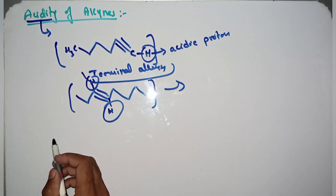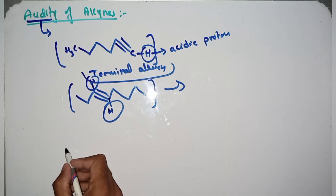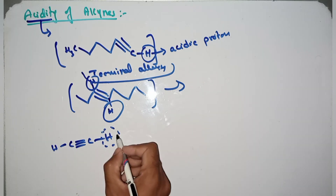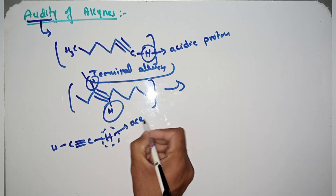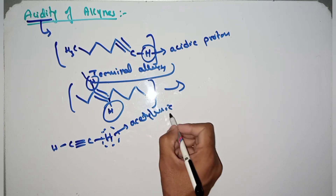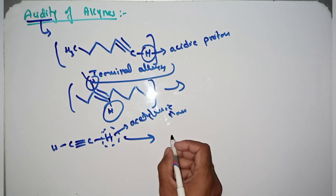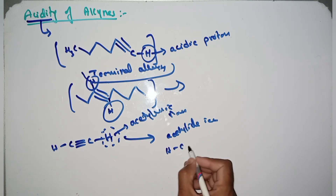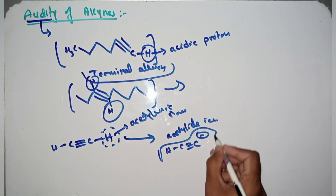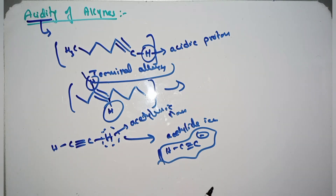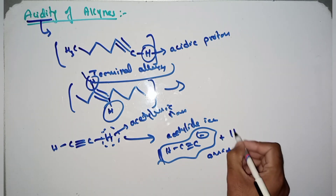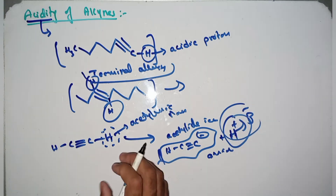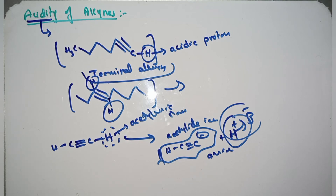Removal of an acetylenic proton — here in acetylene, this proton is called the acetylenic proton. Removal of this acetylenic proton produces an acetylite ion. The acetylite ion carries a negative charge; it is anionic in nature. One proton is generated, and this proton will be abstracted by a base.